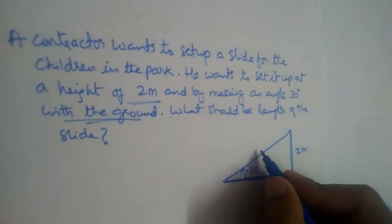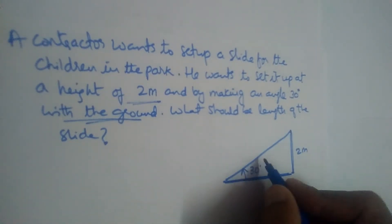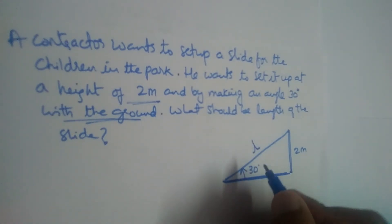We should find the length of the slide, this. In a right angle triangle, this longest side is the hypotenuse. So we need to find the hypotenuse, let it be L.